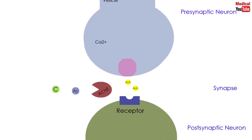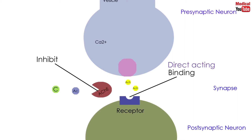So we can notice that there are two ways for the cholinergic agonist to work. Either by binding to the receptor, then it'll be called a direct-acting cholinergic agonist. Or by inhibiting acetylcholinesterase, so increasing the effect of acetylcholine indirectly, and that is called an indirect-acting cholinergic agonist.